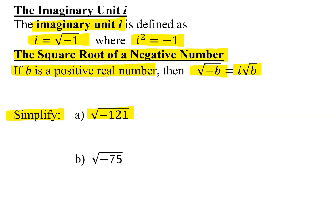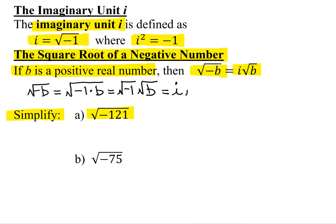The square root of negative b can be written as the square root of negative 1 times b, which is the square root of negative 1 times the square root of b. And the square root of negative 1 is defined to be i, so we get i times the square root of b. That's broken it down in detail, but normally we can immediately cut to the chase and say it's i times the square root of b. Remember, this only works if b is a positive real number.